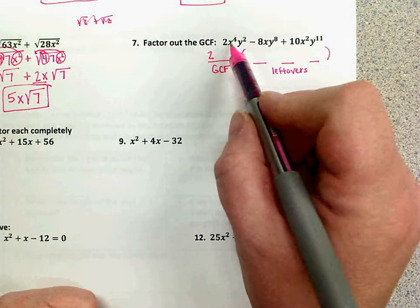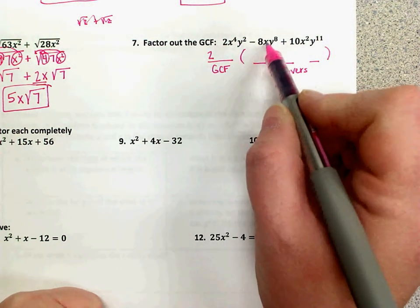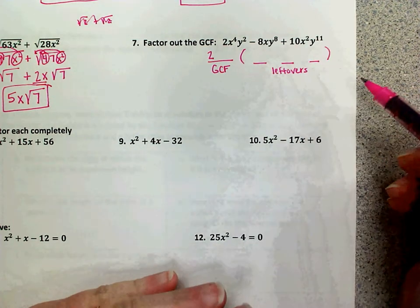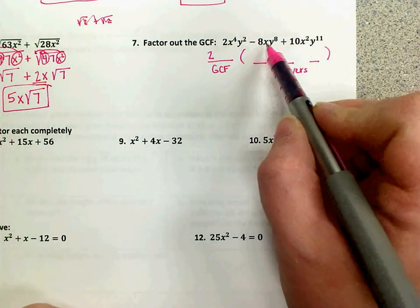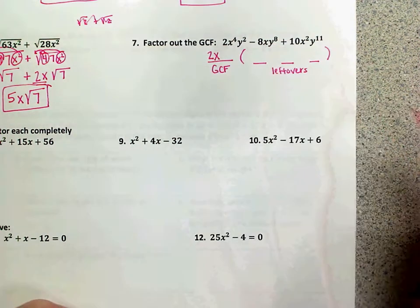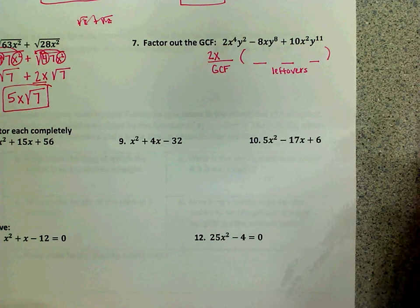With the variables, we have four x's here, one here, and two here. So the largest that they all have cannot be any bigger than the smallest amount, which is an x to the first. So an x is my GCF for the variables, one x.